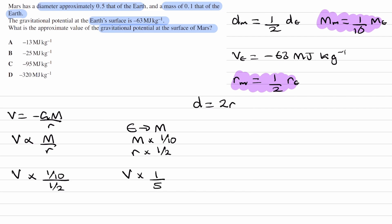The original value of gravitational potential on Earth was minus 63. Multiply this by a fifth and we end up with minus 12.6, which is about minus 13 megajoules per kilogram. And that would be answer A.